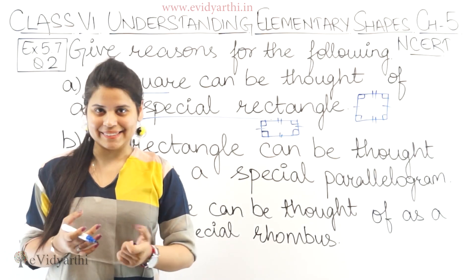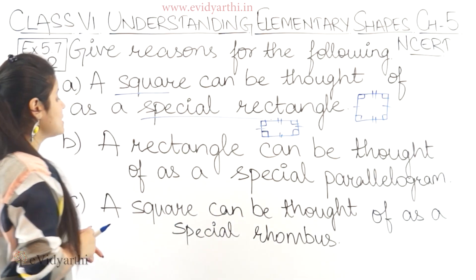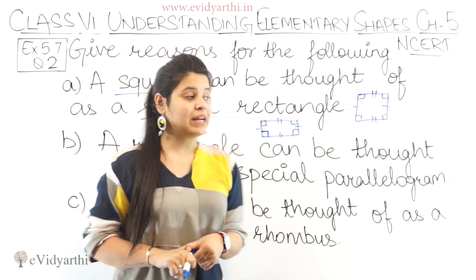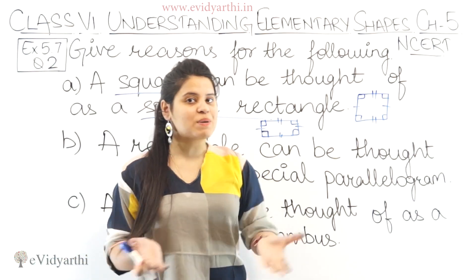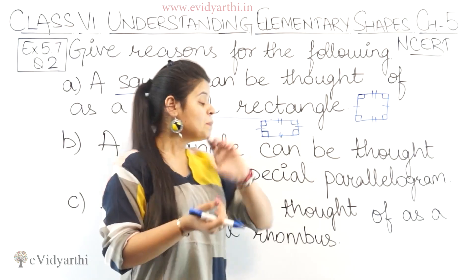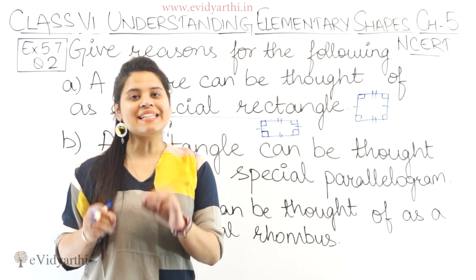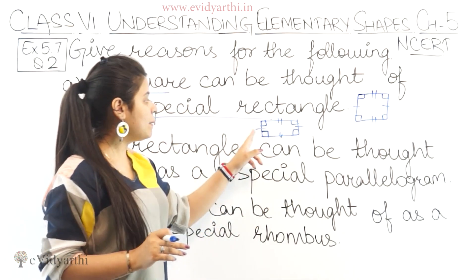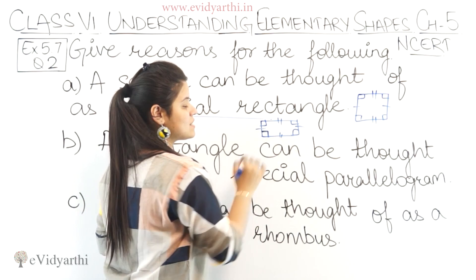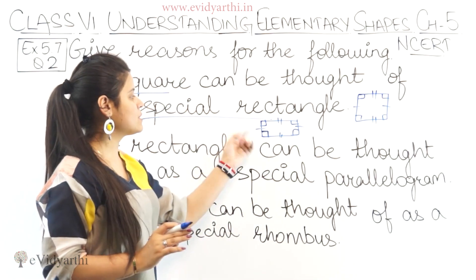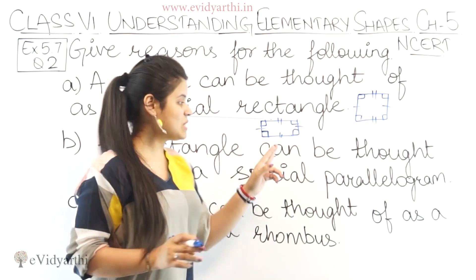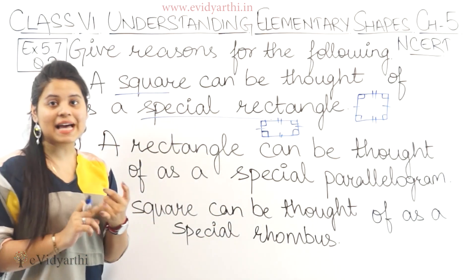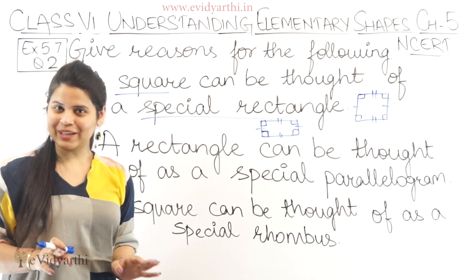The next one is: a rectangle can be thought of as a special parallelogram. Yes, we can call a rectangle a special parallelogram, because a parallelogram's opposite sides are equal and parallel. This is fulfilled by a rectangle because opposite sides of a rectangle are equal and also parallel. So the reason is: opposite sides are equal and parallel.